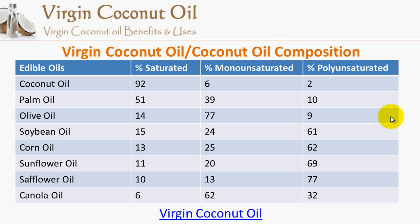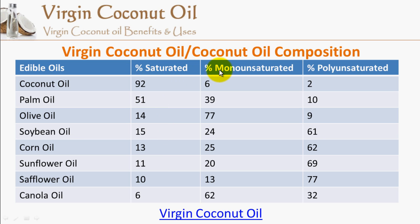This table compares the fatty acid contents of different edible oils: coconut oil, palm oil, olive oil, soybean oil, corn oil, sunflower oil, and canola oil. The columns show the percentage of saturated fatty acids, monounsaturated fatty acids, and polyunsaturated fatty acids in each oil. Coconut oil has the highest percentage of saturated fatty acids, with about 6% monounsaturated and 2% polyunsaturated.